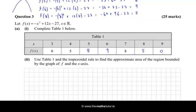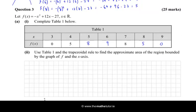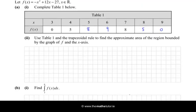Now what we're going to do is use table 1 and the trapezoidal rule to find the approximate area of the region bounded by the graph of f and the x-axis. I'm going to do a quick sketch of what this looks like, just to sort of maybe help with this question.